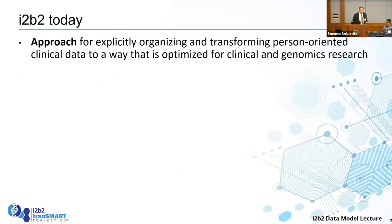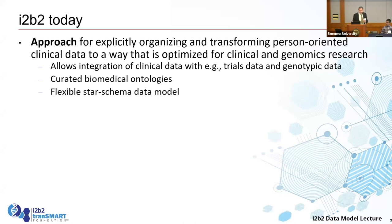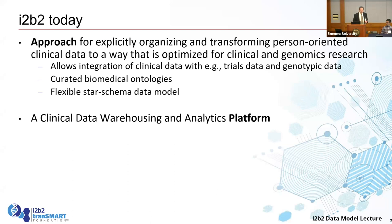It's different from OMOP — or OHDSI I should say — in that it doesn't predicate on a standardized ontology. You can create your own ontology and put in your own data. That's both a strength and a weakness, because you've got to post-facto standardize the data if you're going to use it across a network. But it does allow all kinds of clinical data to be integrated: trials data, genomic data, and so forth. With these curated ontologies we built a flexible star schema that organizes everything around the fact.